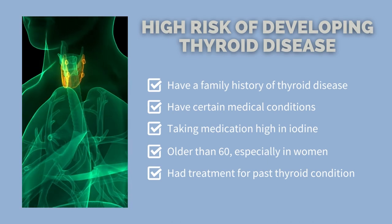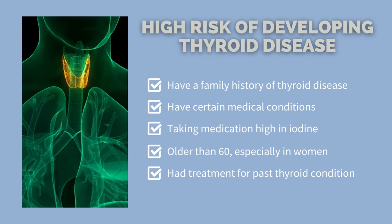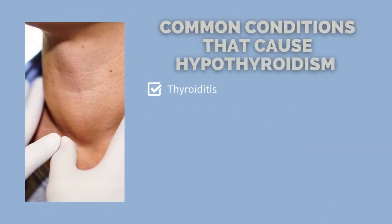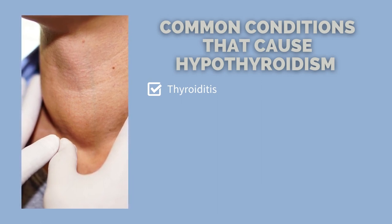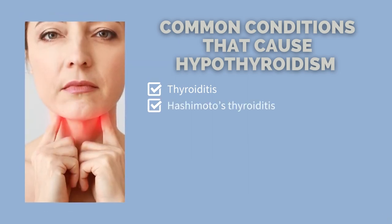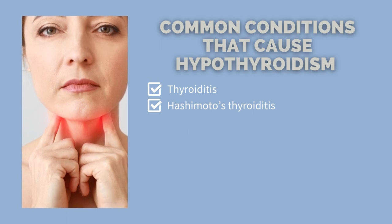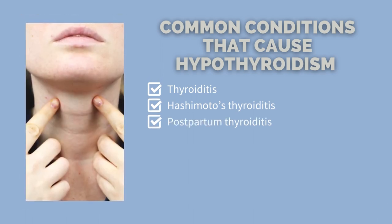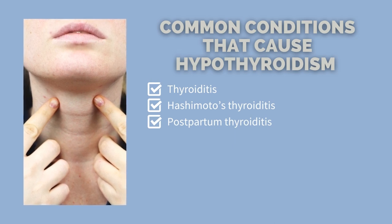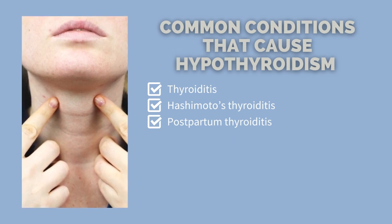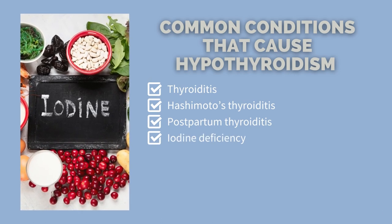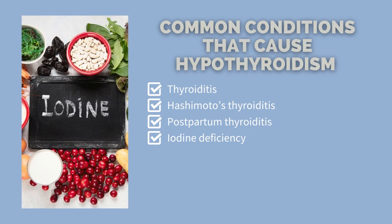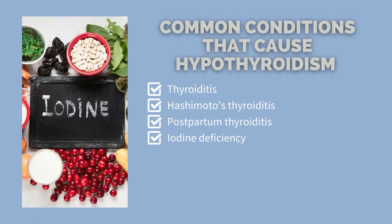Hypothyroidism and hyperthyroidism can be caused by any disease that impacts the way the thyroid gland works. The most common conditions causing hypothyroidism include thyroiditis — inflammation or swelling of the thyroid gland; Hashimoto's thyroiditis, an autoimmune condition where the body's cells attack and damage the thyroid; postpartum thyroiditis, which occurs in 5% to 9% of women after childbirth and is usually temporary; and iodine deficiency, which affects several million people around the world.